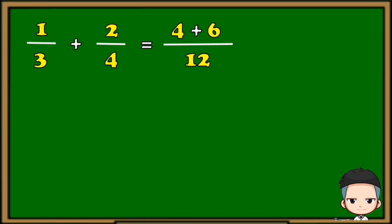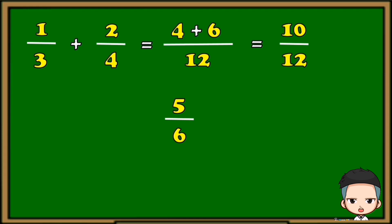Now let's simplify our answer. Let's copy the denominator first, then 4 plus 6 is 10. We now have 10 over 12. 10 over 12 can still be simplified. The simplified form of 10 over 12 is 5 over 6, and that will be our final answer.